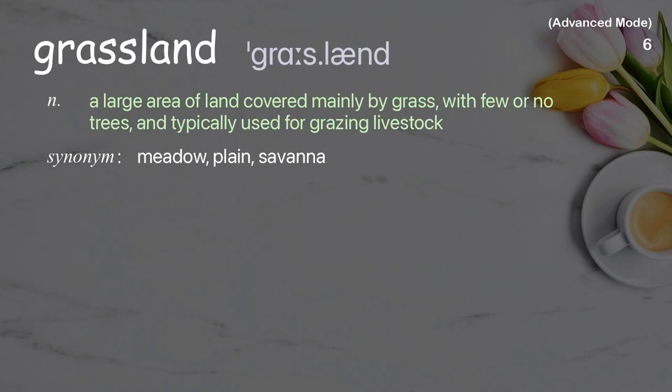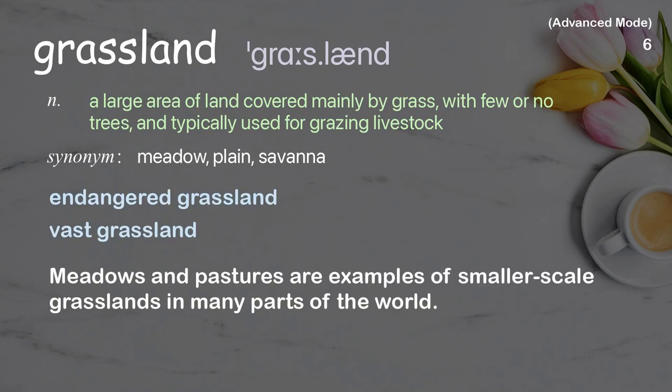Grassland: a large area of land covered mainly by grass, with few or no trees, and typically used for grazing livestock. Examples: endangered grassland, vast grassland. Meadows and pastures are examples of smaller-scale grasslands in many parts of the world.